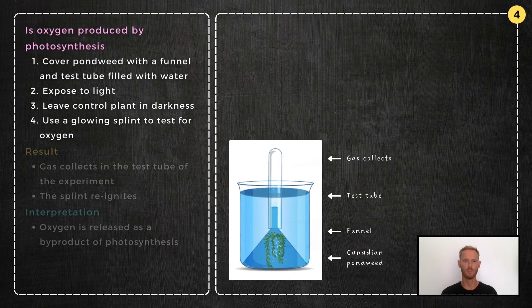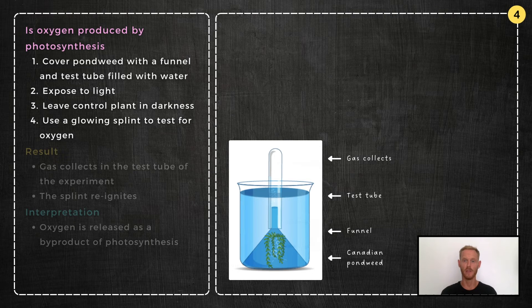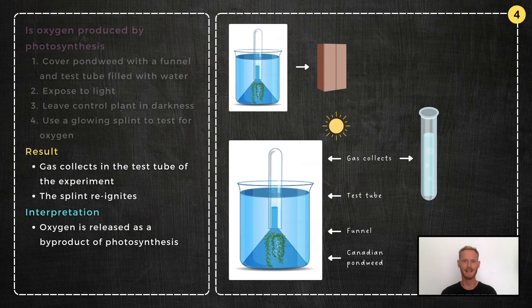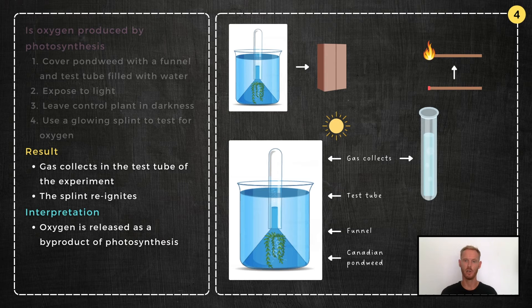Experiment 4: Is oxygen produced by photosynthesis? Cover an aquatic plant with a funnel in a beaker of water. Fill a test tube with water, place it upside down over the stem of the funnel, and expose the plant to light. Set up a control in the same way and place it in a dark cupboard. Gas collects in the test tube of the experiment. To prove that it's oxygen, put a glowing splint into the tube and it will reignite.